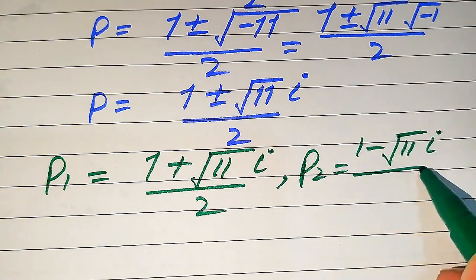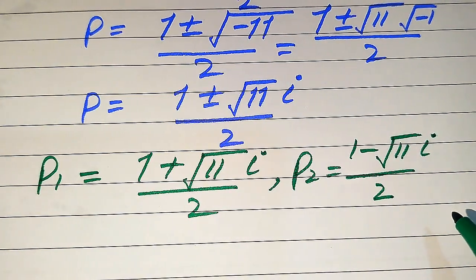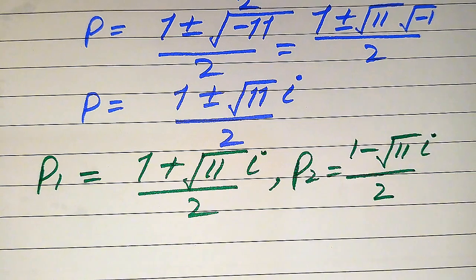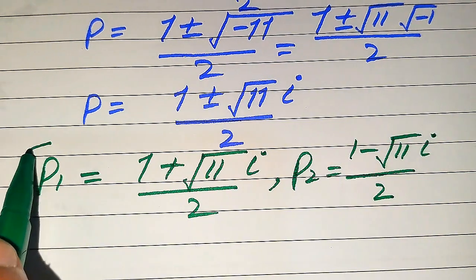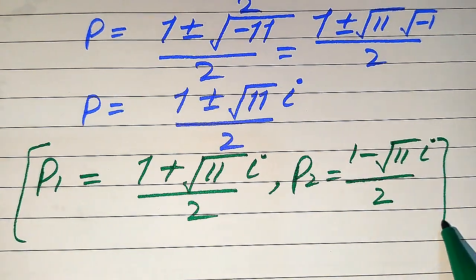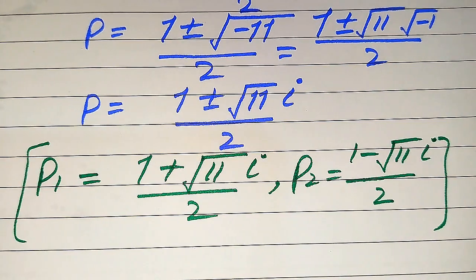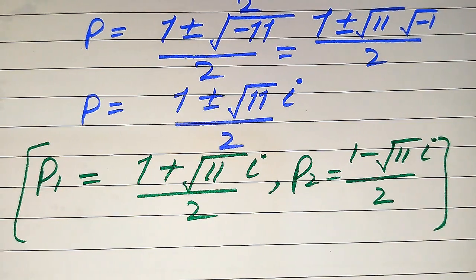This is the final conclusion about the solution set of this problem. Both roots are complex, so there are no real solutions. Thank you so much for watching this video — please subscribe to my channel for more exciting videos.